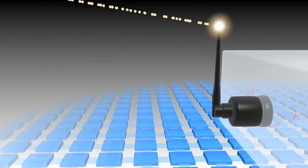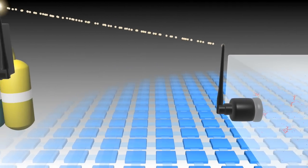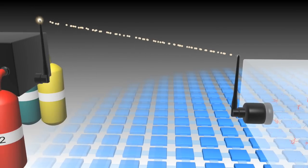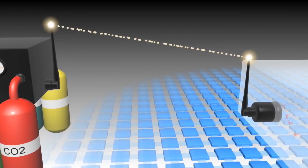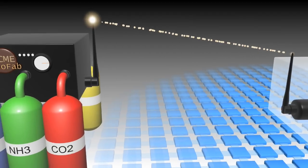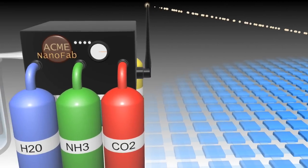Now we're going to transmit it to our nifty nanofab. Our acme nanofab is taking in CO2, ammonia, and good old water, H2O.